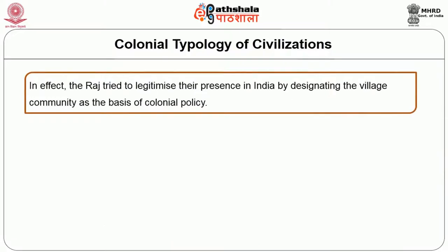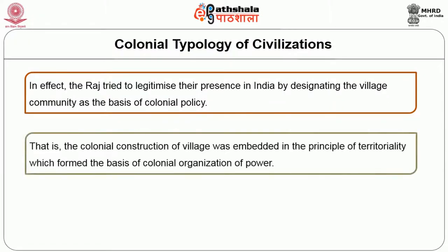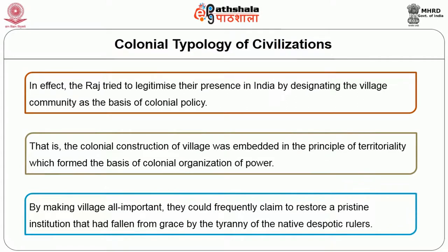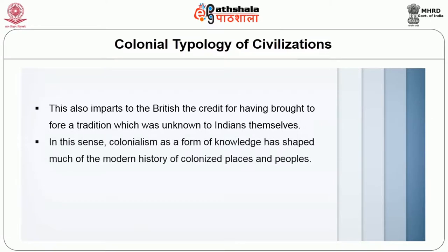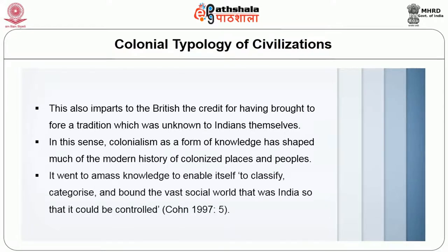In effect, the Raj tried to legitimize their presence in India by designating the village community as the basis of colonial policy. A colonial construction of village was embedded in the principle of territoriality which formed the basis of colonial organization of power. By making the village all-important, they could frequently claim to restore a pristine institution that had fallen from grace under native despotic rulers. This also imputed to the British the credit for having brought to fore a tradition unknown to Indians themselves. In this sense, colonialism as a form of knowledge shaped much of the modern history of colonized places and peoples.